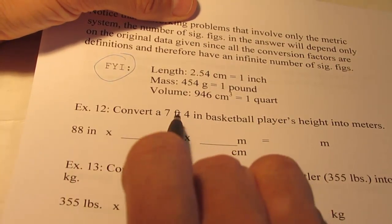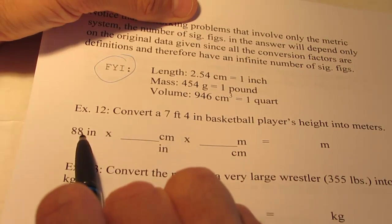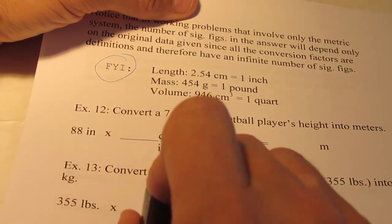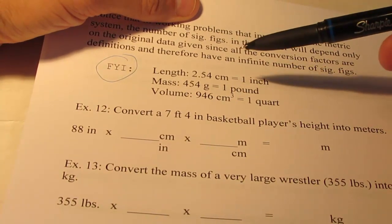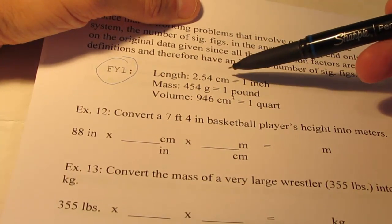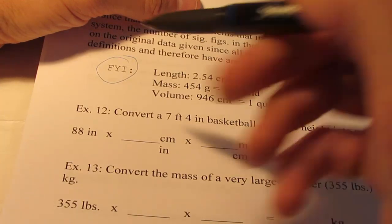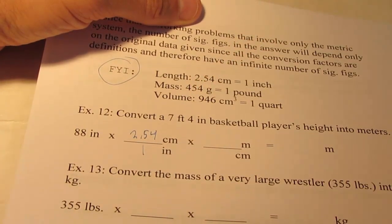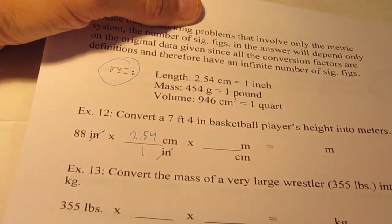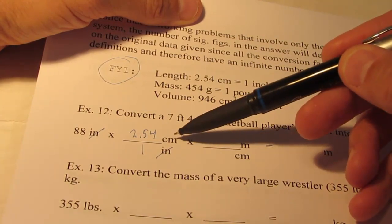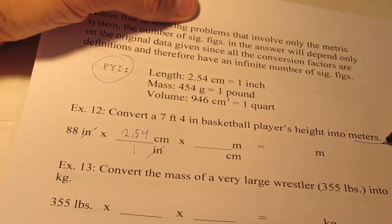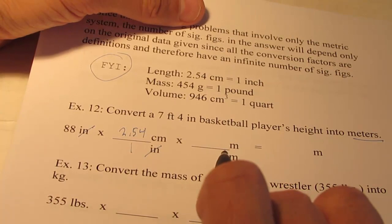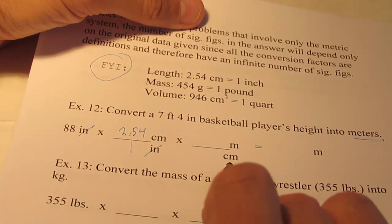So, I converted his height from feet and inches just into straight inches. So there are 88 inches in 7 feet 4 inches. And of course, you want to get out of inches and into centimeters, because I don't have a conversion factor that allows me to go from inches to meters directly. So first I have to go from inches to centimeters. And you can see that 1 inch is 2.54 centimeters. Now if I were to stop the calculation right now, I would be in centimeters.